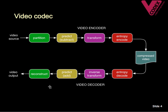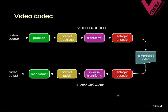Most video codecs contain the same basic building blocks. These include partitioning, prediction, transform and entropy encoding. And you can see that each one of these in the encoder has a counterpart in the decoder.